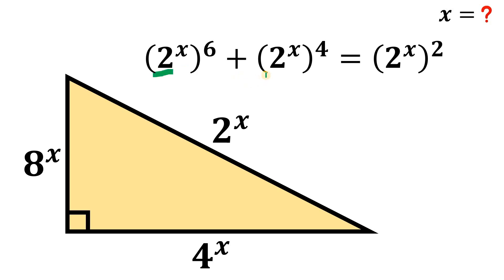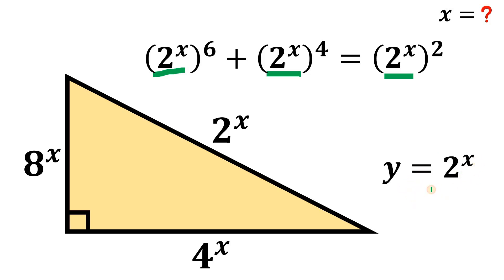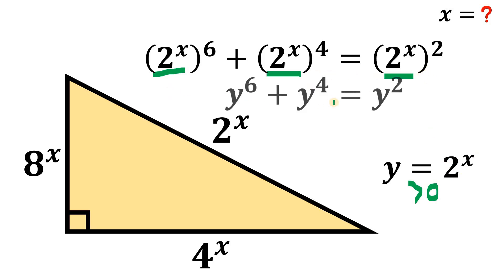Since we now have a common term of 2 raised to the power of x, we substitute y equals 2 raised to the power of x. Note that y is greater than 0, because 2 raised to the power of x is always greater than 0. Our equation now becomes y raised to the power of 6, plus y raised to the power of 4, equals y raised to the power of 2.